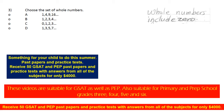Let's check B: 1, 2, 3, 4, and so on. The whole numbers include 0, so there's no 0 there. So this is not the set of whole numbers.